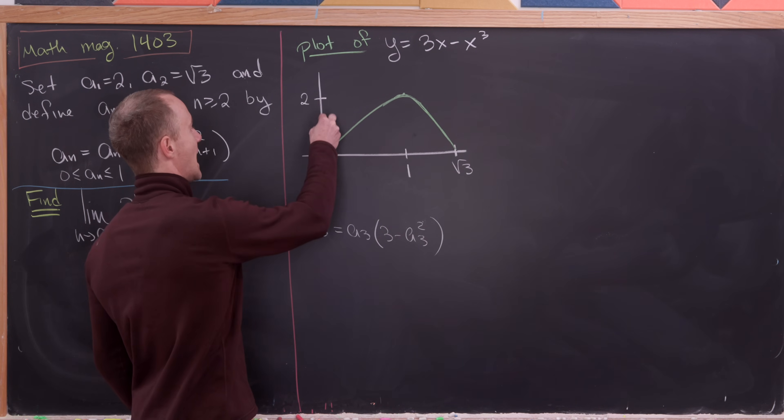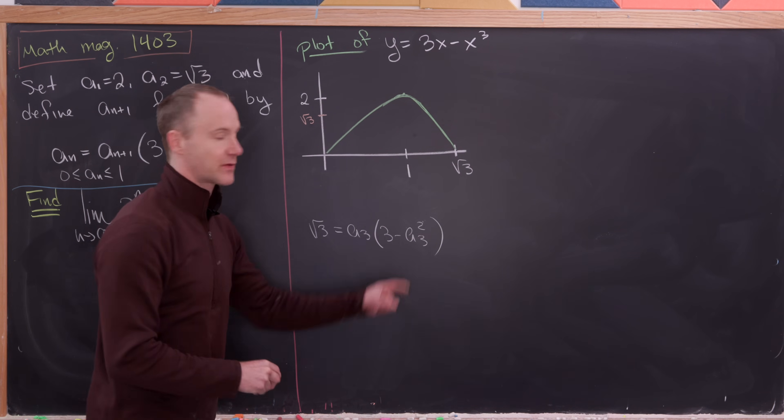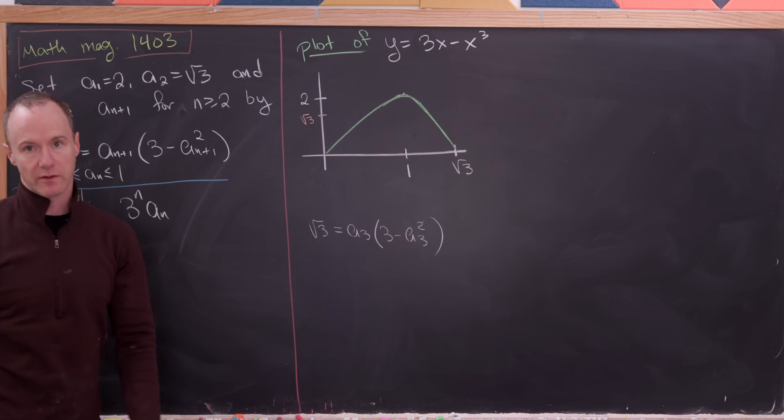So let's go over here on the y axis to the square root of 3. So that'll be right around there and observe that a sub 3 will be solutions to this equation 3x minus x cubed equals square root of 3.